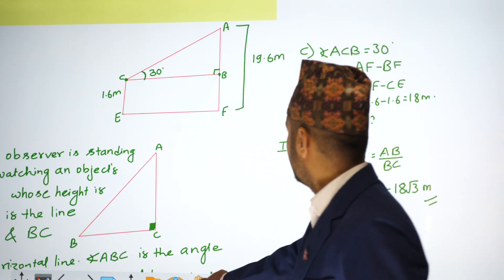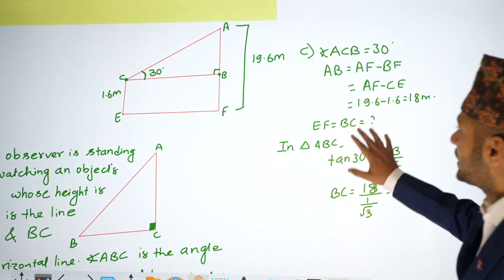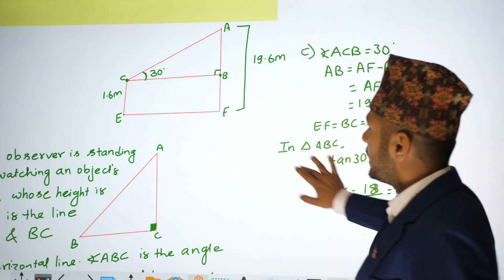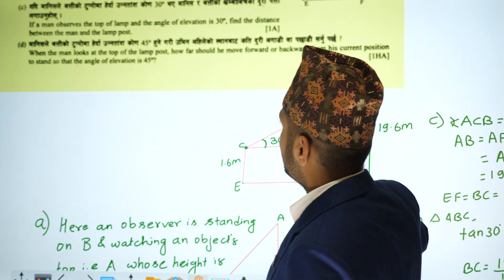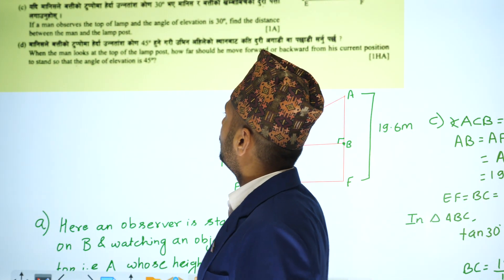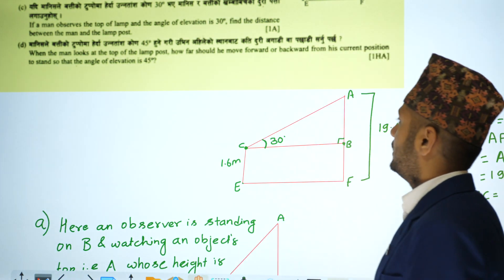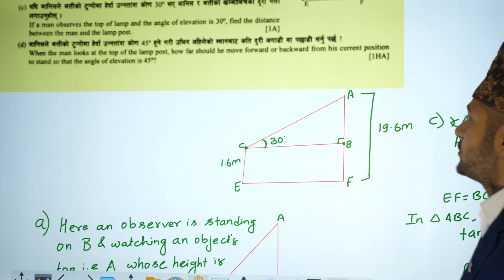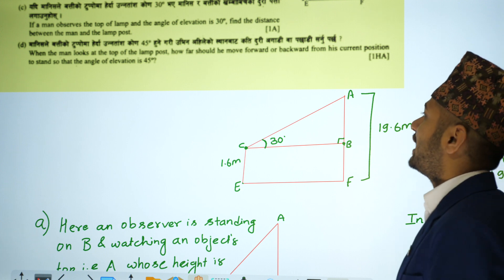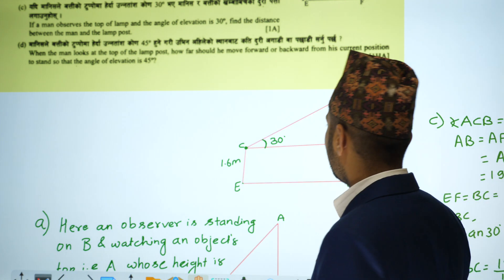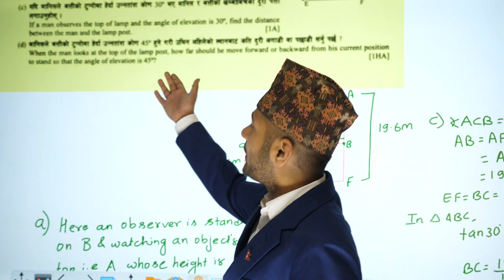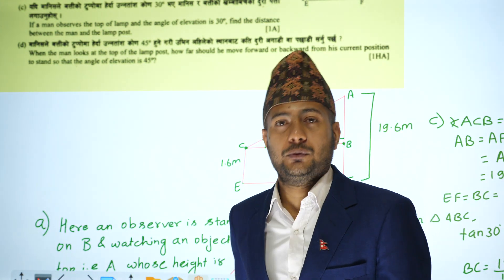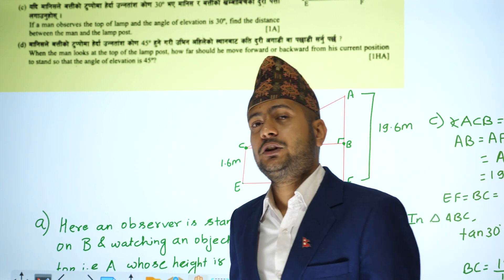The next question is: when the man looks at the top of the lamp post, how far should he move forward or backward from his current position so that the angle of elevation becomes 45 degrees?